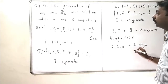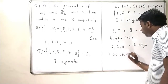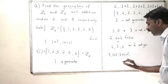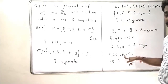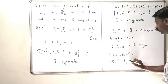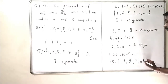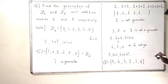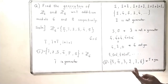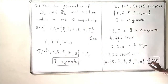Our last candidate is 5 bar. Checking: 5 bar plus 5 bar is 10 bar which is 4 bar; three times gives 15 bar which is 3 bar modulo 6; four times gives 20 bar which is 2 bar; five times gives 25 bar which is 1 bar; and six times gives 30 bar which is 0 bar. So 5 bar generates all elements of Z6 — 5 bar is a generator. Therefore Z6 has two generators: 1 bar and 5 bar.